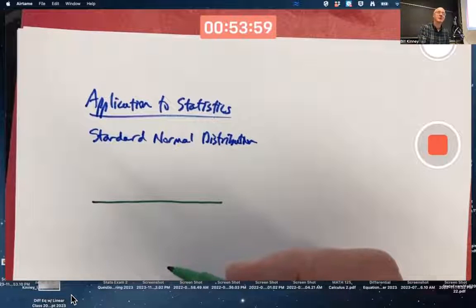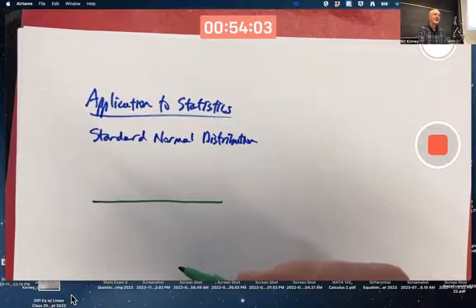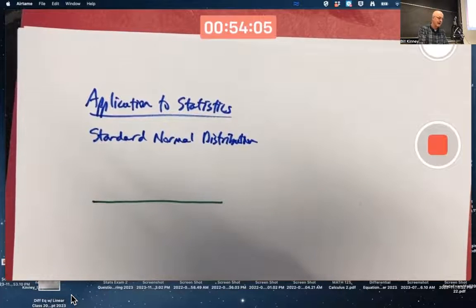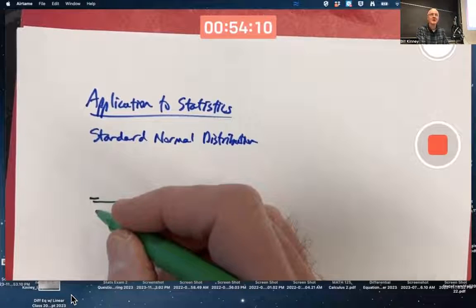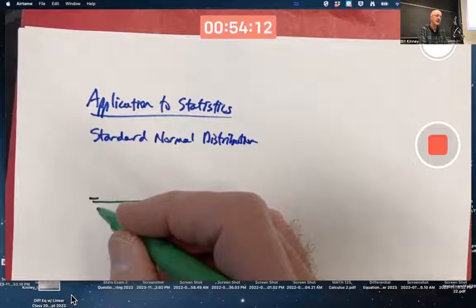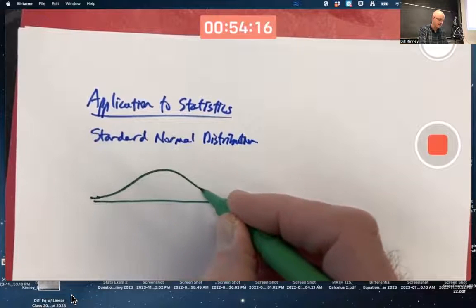Last time we talked about the most beautiful equation in the universe, e to the i pi plus 1 equals 0. Here, if you get abducted by aliens again and this time they ask you what's the most useful curve in the universe, you can say I know it's the normal curve. You might even say the standard normal curve.